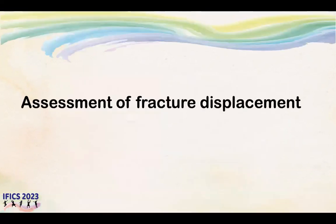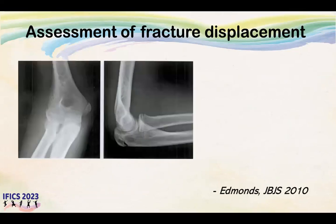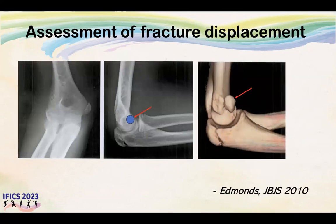Regarding assessment of fragment displacement, the standard radiographic views obtained are AP and lateral views. However, it has been shown these views are inaccurate for assessing fracture displacement. In many cases of fractured medial epicondyle, the displacement is in the anterior direction, so on an AP view we cannot see the displacement. On the lateral view, you cannot see the displacement because the fragment is superimposed on the distal humerus. Therefore, CT scan gives the most accurate estimation of displacement of the fracture fragment.